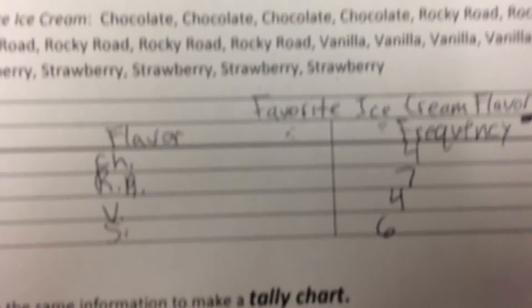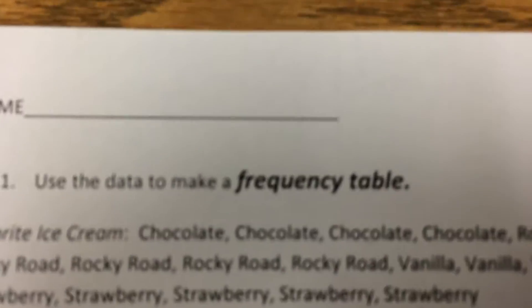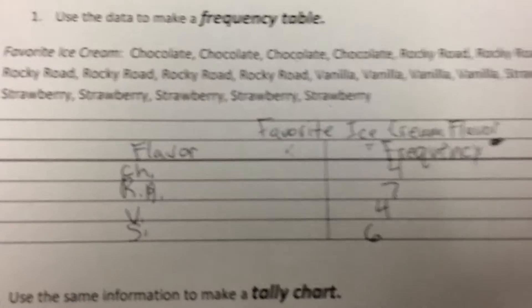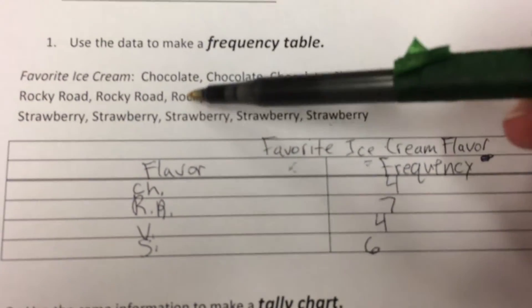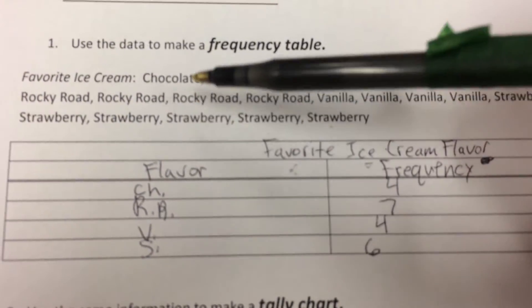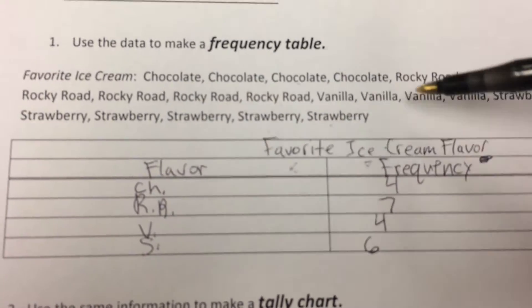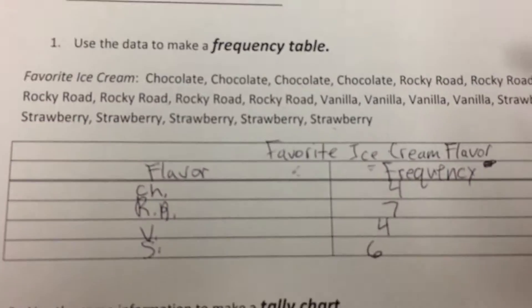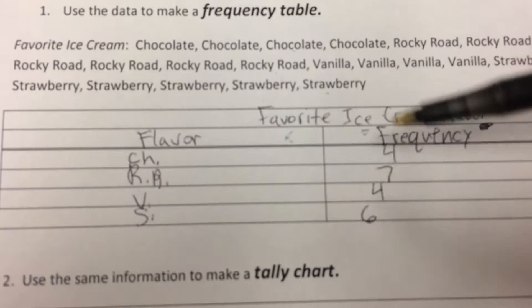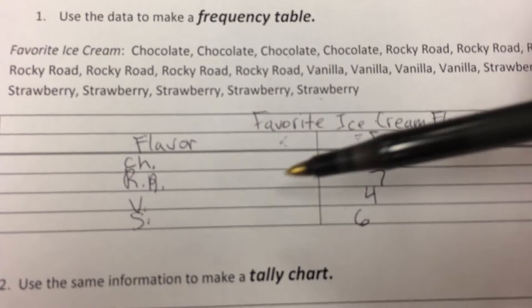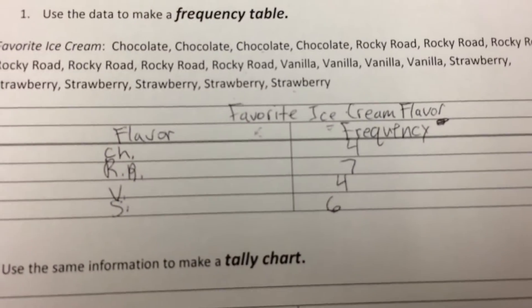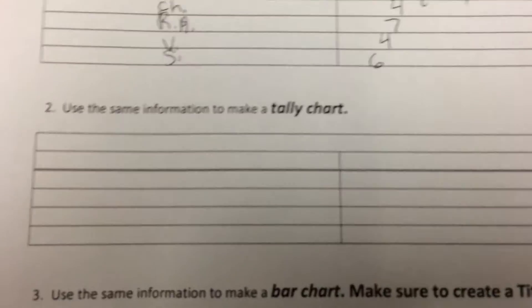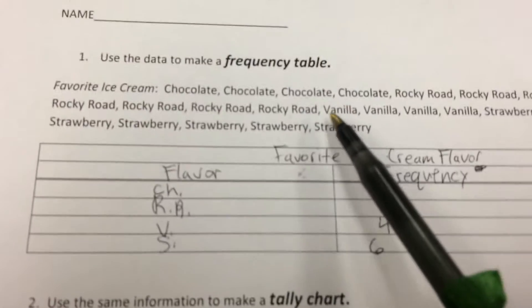What I really like about this table rather than the raw list is that I can understand it a lot more easily. A long list takes time to figure out, but when I look at this table I know automatically that seven people like rocky road and four people like vanilla. It just makes the information a lot easier to understand.